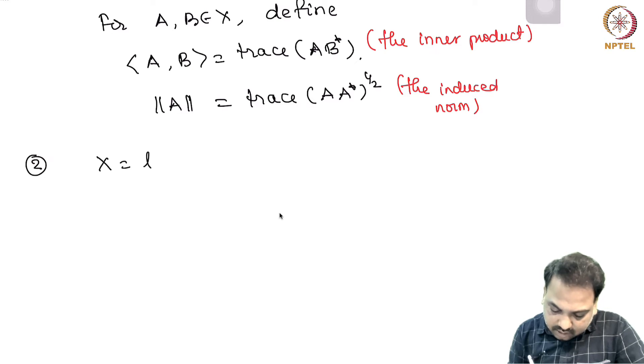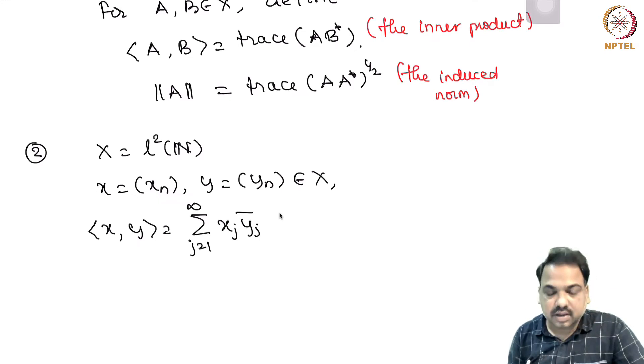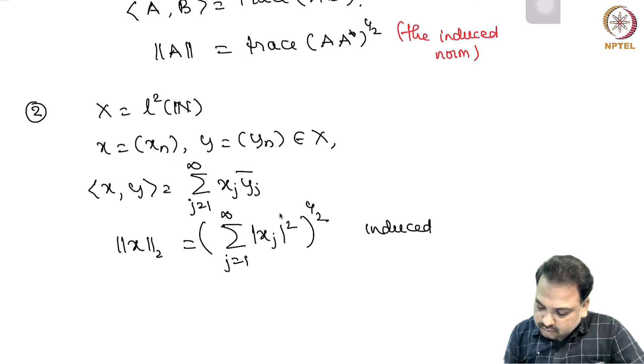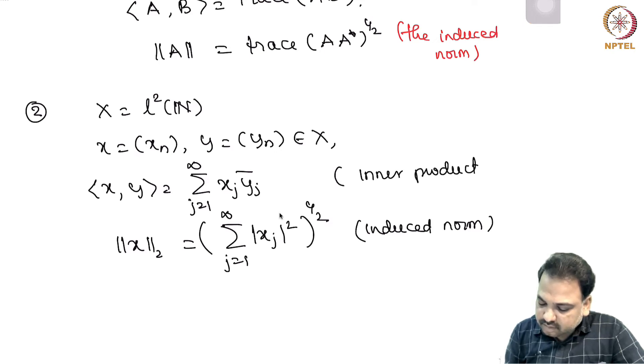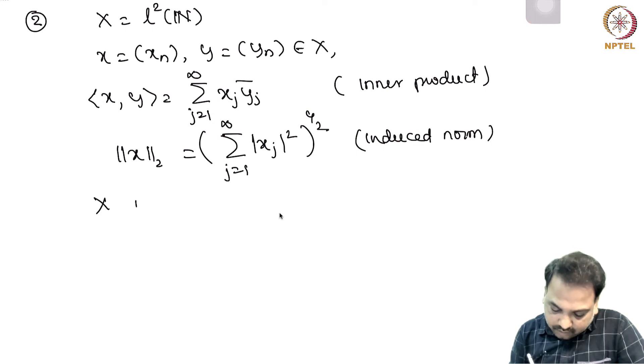Let us take X to be l^2(N). X = (x_n), Y = (y_n) coming from X. We know that the inner product is defined as summation j equals 1 to infinity x_j y_j bar, and the induced norm is ||X|| = (summation |x_j|^2)^(1/2), which is a generalization of the Euclidean norm. We can show that this space is complete. Hence, X is a Hilbert space.